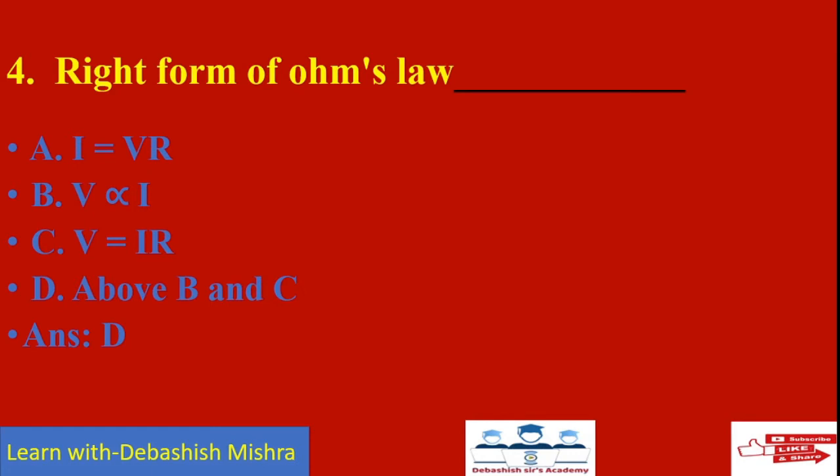Right form of Ohm's Law: I = V/R is wrong because we know that V = IR. V is directly proportional to I — that is correct. V = IR — that is also correct. So answer D, both B and C, is the correct answer: V is directly proportional to I, and V equals I times R.